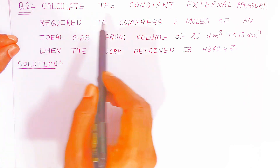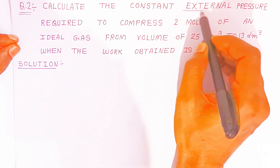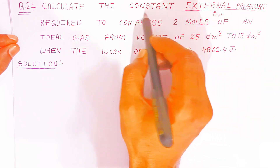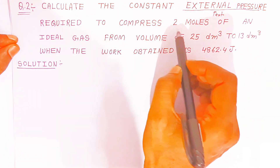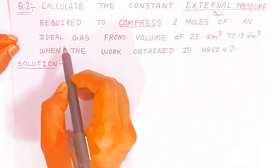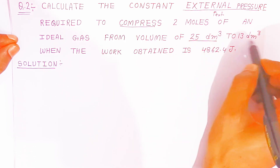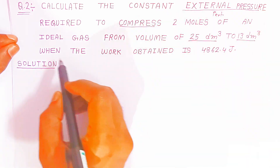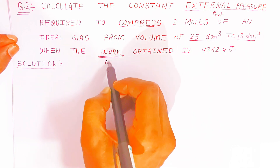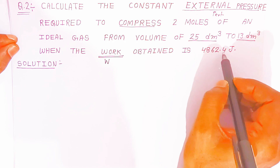You have to calculate the constant external pressure — that means you have to calculate P external. It is required to compress 2 mol of ideal gas from 25 dm³ (25 liters) to 13 dm³ (13 liters). The work obtained is given: W = 4862.4 J.